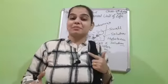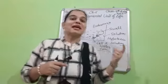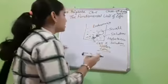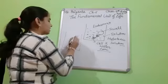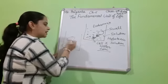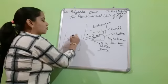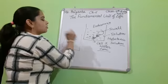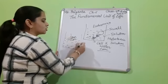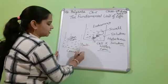So the water enters by the process of osmosis — from high concentration to low concentration, moving inside the cell. Next, suppose I am taking another cell like an RBC, and the water has a certain amount of concentration.